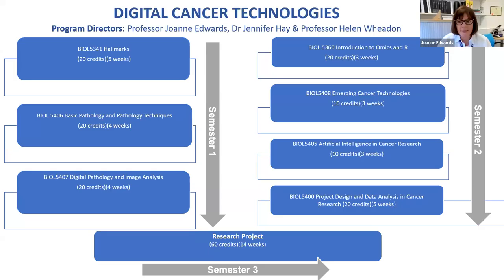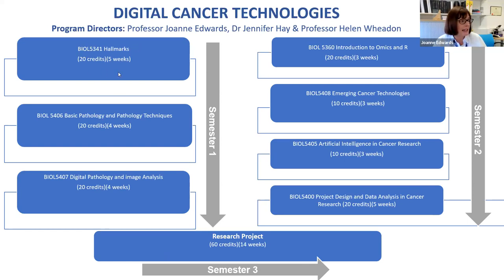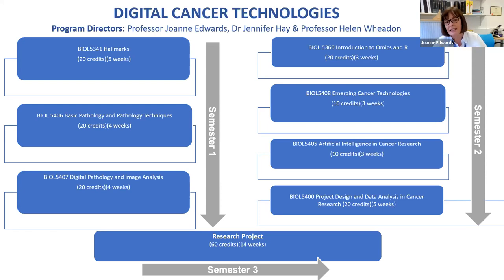Joanne shared a slide to help explain the structure of the programme. The Digital Cancer Technologies programme will have two semesters of taught components and then over the summer semester it will be a research project. The programme starts with a 20-credit course in the Hallmarks of Cancer, designed to equip you with the background biology you need to understand the rest of the course. It will focus on the different hallmarks of cancer, oncogenes, tumour suppressor genes, and signal transduction pathways.